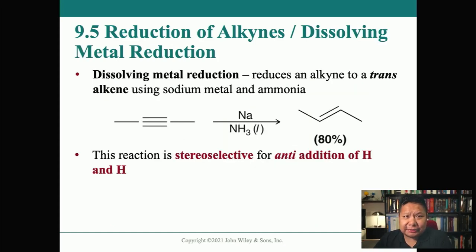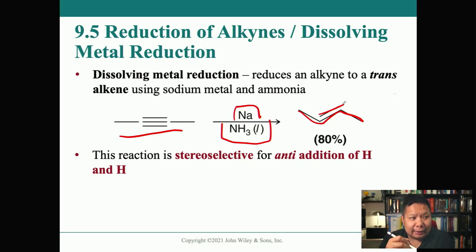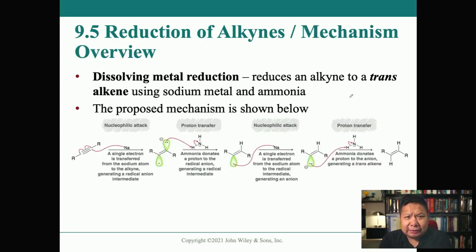You can also reduce alkynes using dissolving metal reduction, which reduces an alkyne to a trans alkene using sodium metal and liquid ammonia. Here an alkyne with sodium metal and liquid ammonia gives 80% trans alkene — in contrast to getting the cis alkene with Lindlar's catalyst. This reaction is stereoselective for anti-addition of hydrogen. There is a proposed mechanism involving radical chemistry.